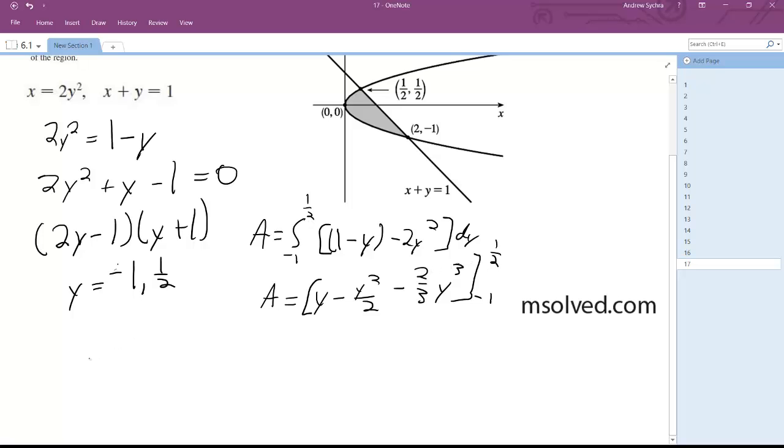All right, so subbing in the values, A is equal to one half minus one eighth minus two thirds times one half raised to the third, minus the quantity negative one minus one half minus two thirds times negative one.